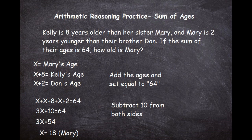That is the actual answer to the question, but we want to take one last step that a lot of people forget: the check. You want to check to make sure the question was answered correctly so that when you move on to the next question you know that one's right. This builds confidence — doing 10 or 20 question tests, you can say you know you got 19 out of 20 right. This step will help you catch mistakes. The way we check is: set Mary's age equal to 18, figure out Kelly's and Don's ages, then verify that the sum of those ages is 64.